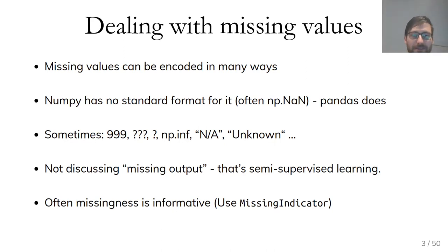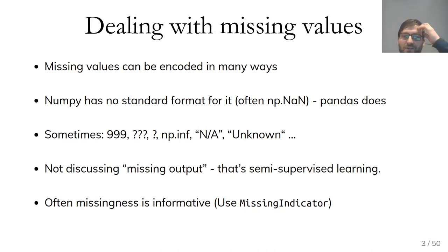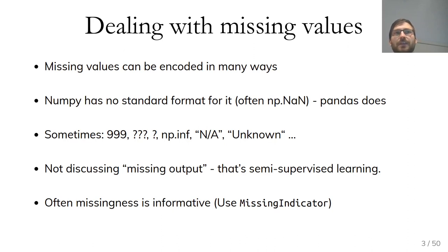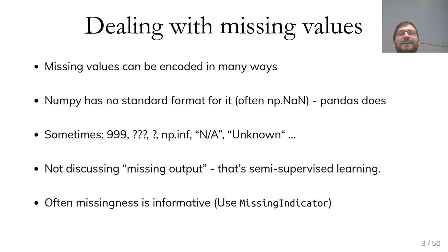If someone gives you a dataset, the first thing you figure out is how missing values are encoded. Often they're encoded as 'NA' or 'unknown' or something. Two years ago there was a homework in this class where I gave people a dataset from the city of Boston where missing values were encoded by nines, and the number of nines depended on the longest number in that column. So each column had a different way to encode the missing value — it was 9, 99, 999, or 9999 depending on how long the column was.